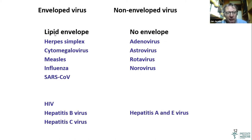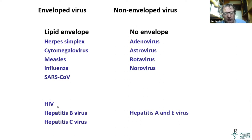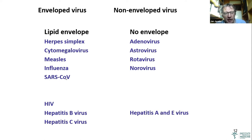Detergents and soap can already dissolve the lipid envelope. So HIV is very susceptible to disinfectants and antiseptics. SARS-CoV-2 and all enveloped viruses are similarly susceptible. If we make a table with increasing resistance to heat, ultraviolet light, and disinfectants, we see that enveloped viruses are very susceptible.